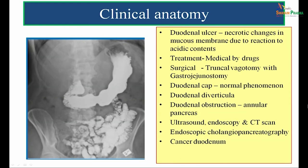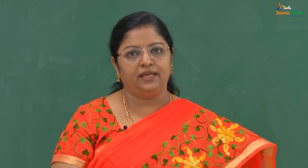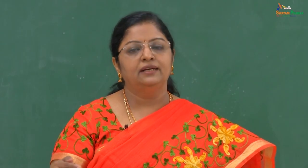Clinical anatomy: duodenal ulcer is more common than gastric ulcer. Ulcer is a necrotic change in the mucous membrane due to reaction to acidic contents. Although the duodenum does not synthesize acid, the first part receives acidic contents from the stomach, favouring ulcer formation. Duodenal ulcers can be treated medically with drugs or surgically by truncal vagotomy with gastrojejunostomy. Truncal vagotomy severs part of the vagus nerve to inhibit acid secretion, and gastrojejunostomy bypasses the duodenum so food passes directly from the stomach into the jejunum.